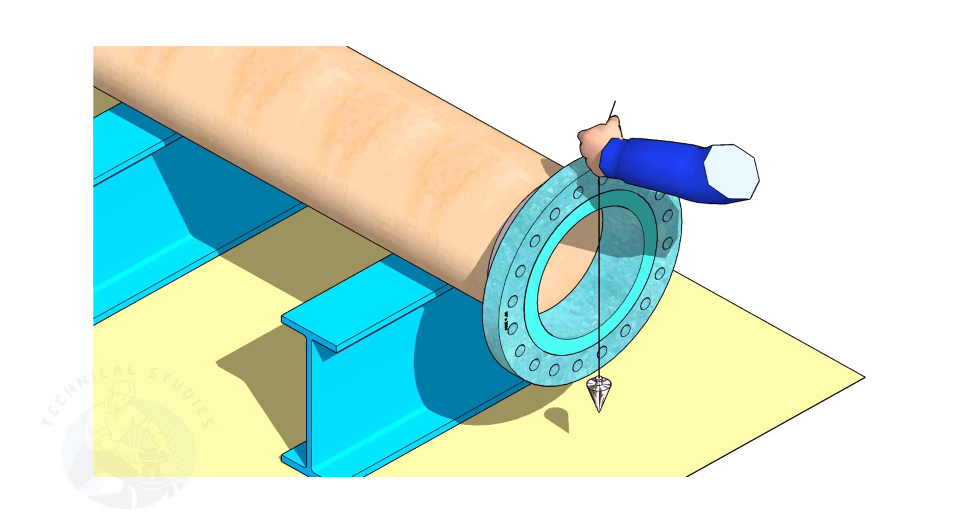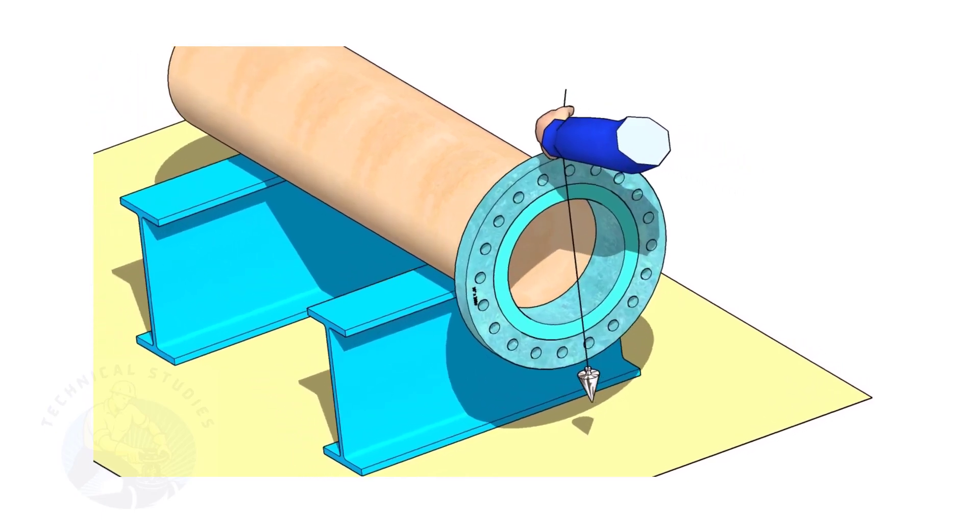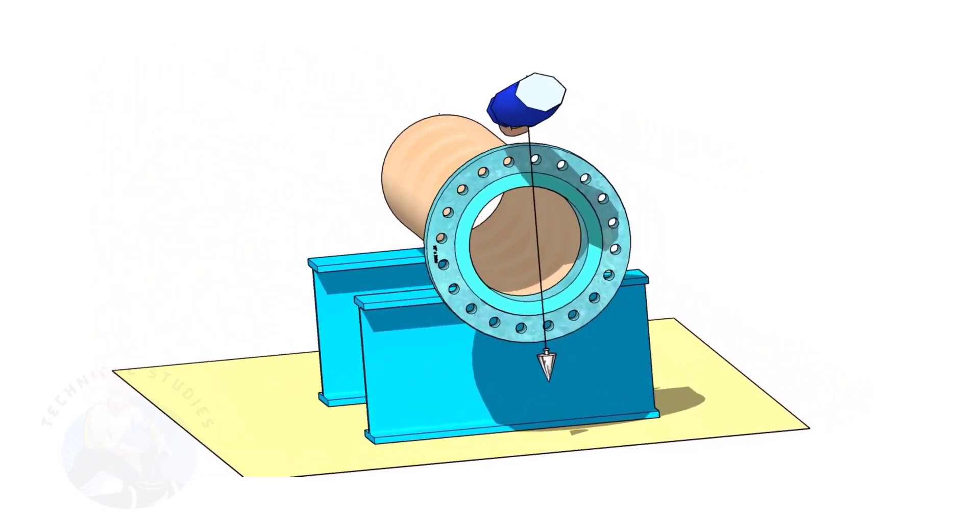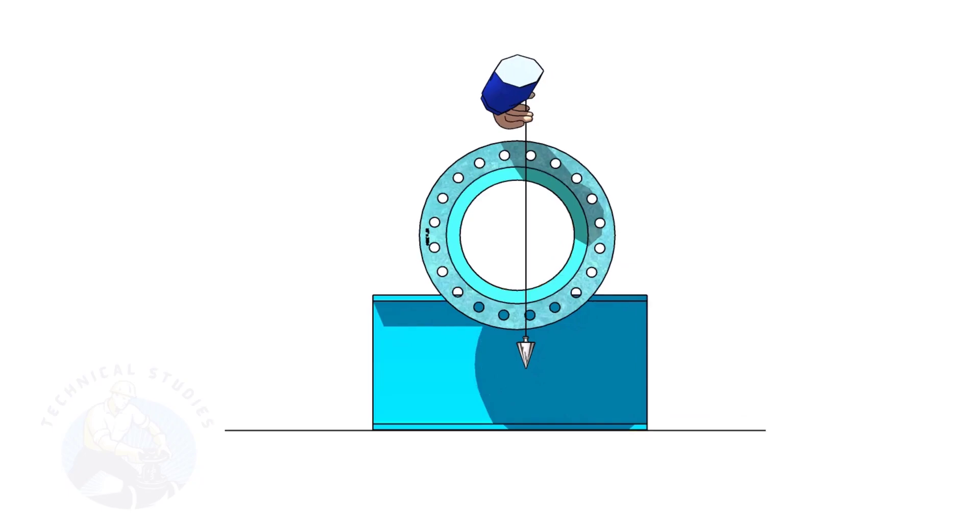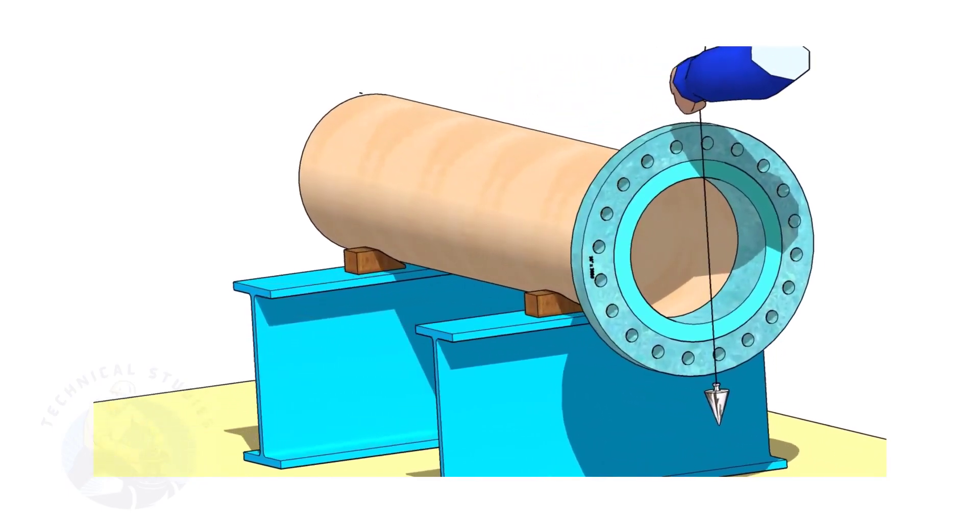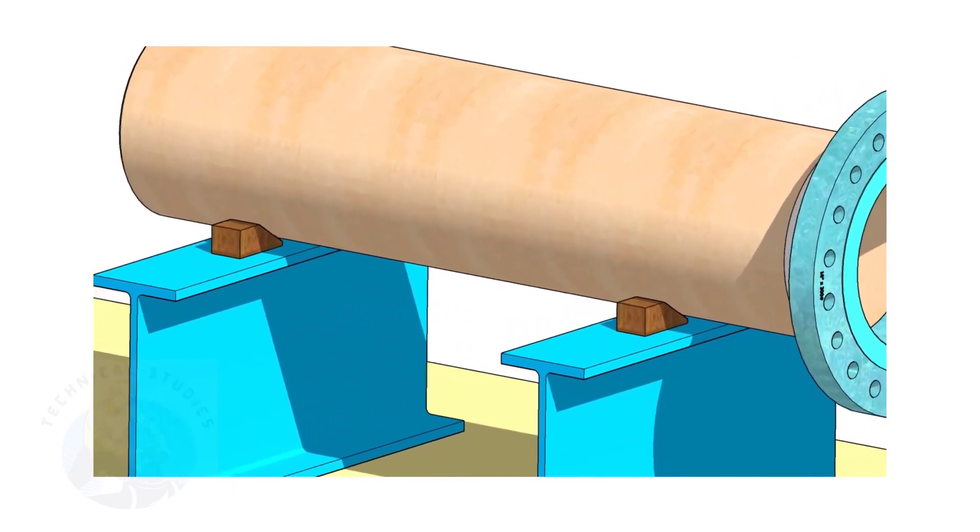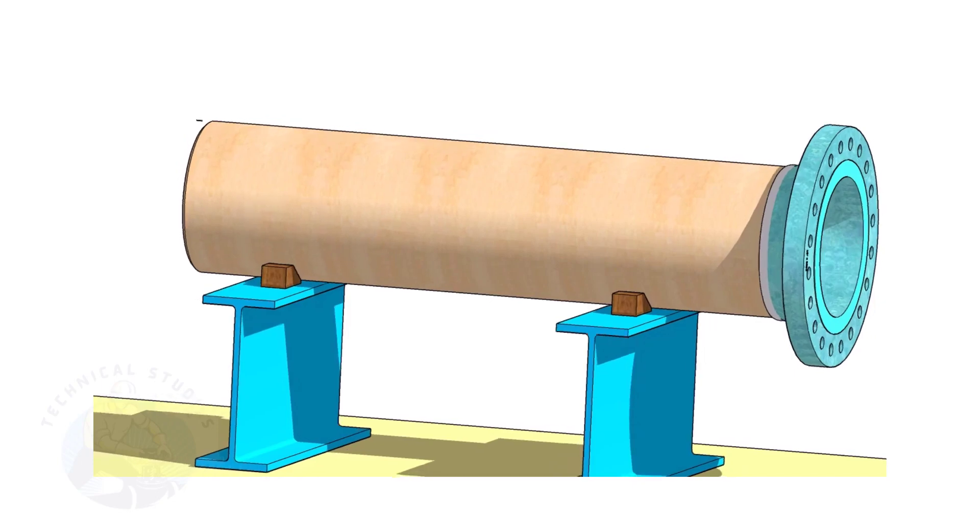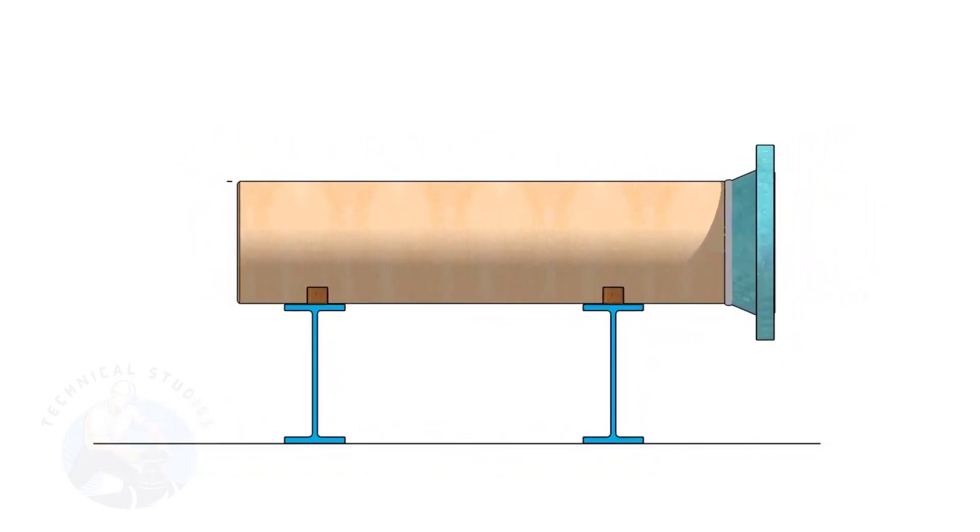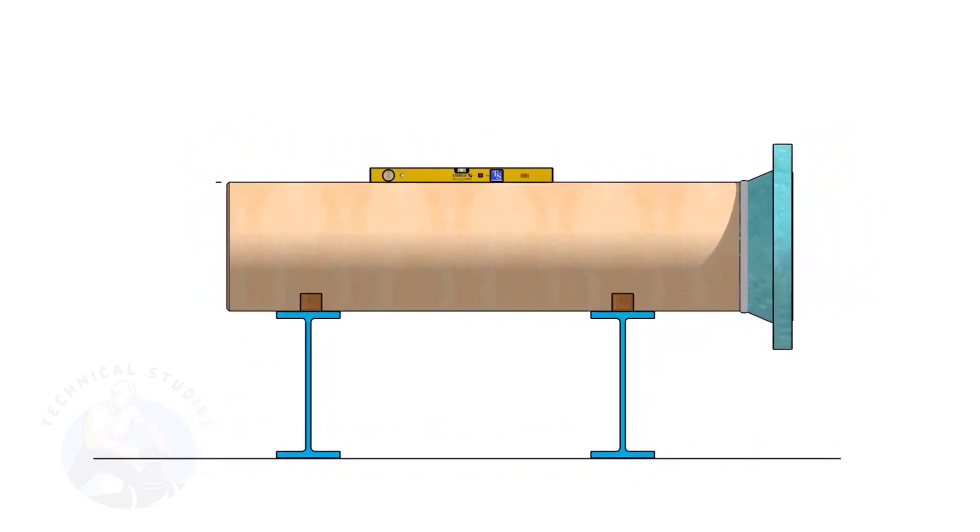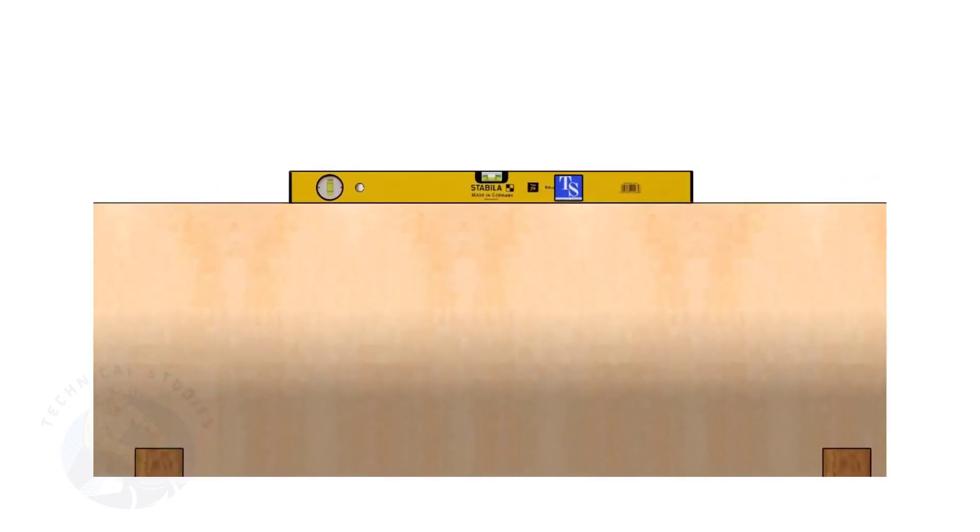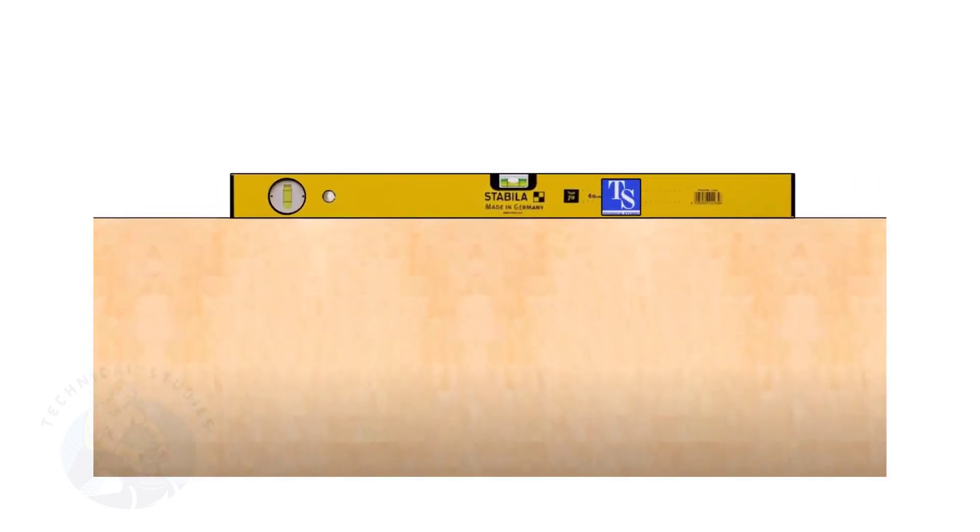Choose a set of holes closer to the center of the flange. This will ensure more accuracy. Provide proper supports on both sides of the pipe to prevent rotation. Correct the level of the pipe. Check the plumbness of the flange a second time.